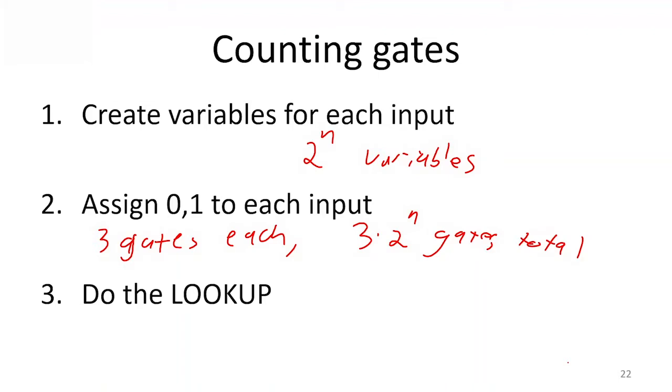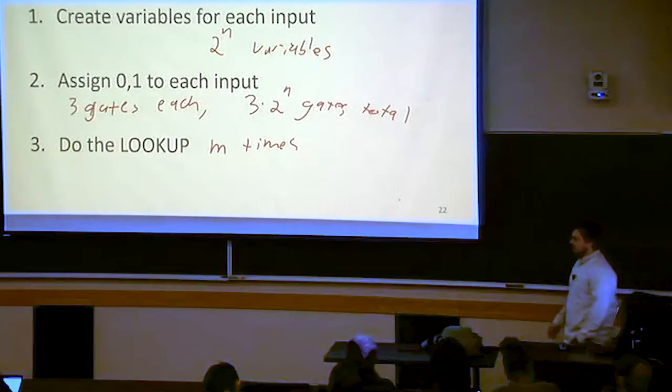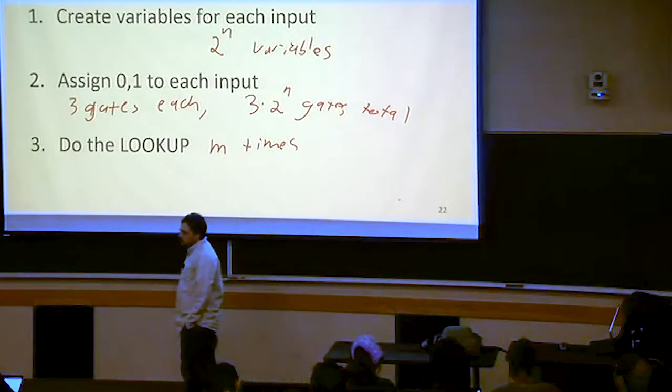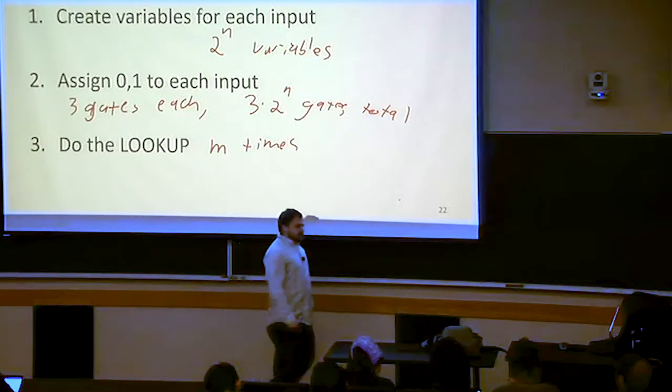And then finally, we do the lookup. We're going to have to do the lookup m times for all of our outputs. So once per output bit that we might consider. So if we only have one output, we have to do the lookup one time.